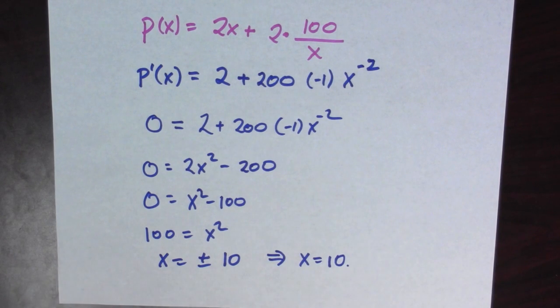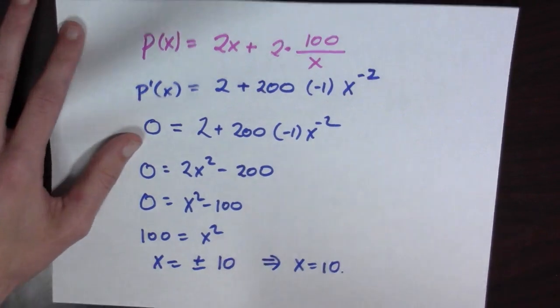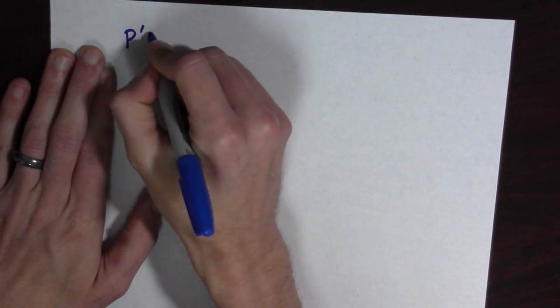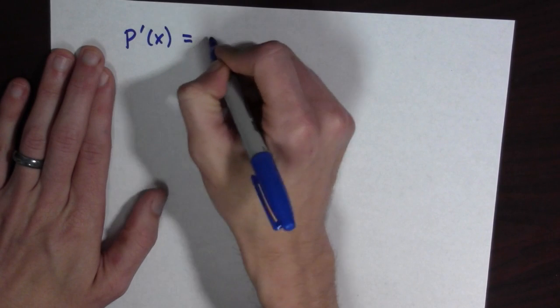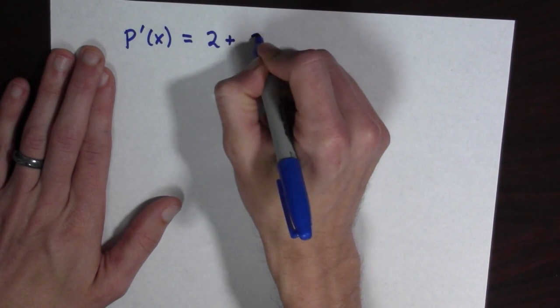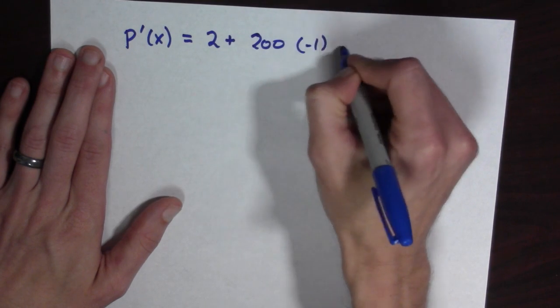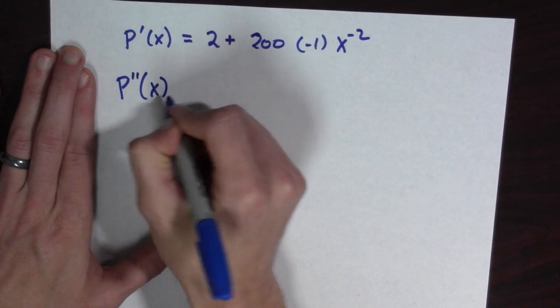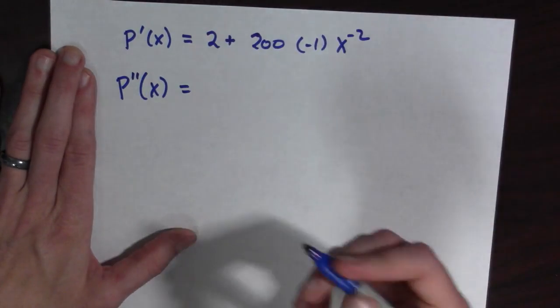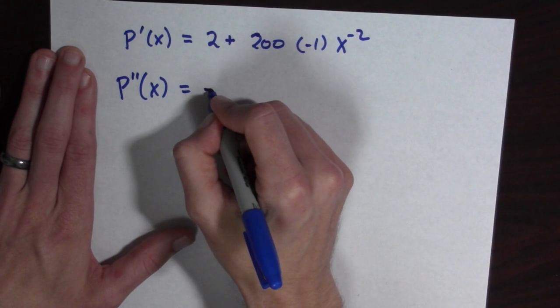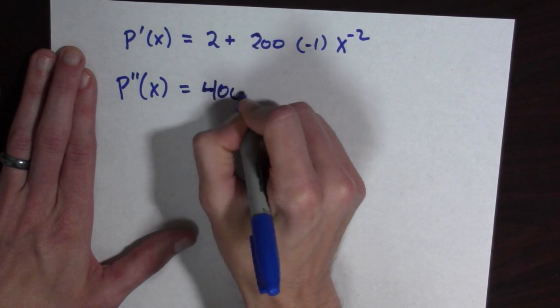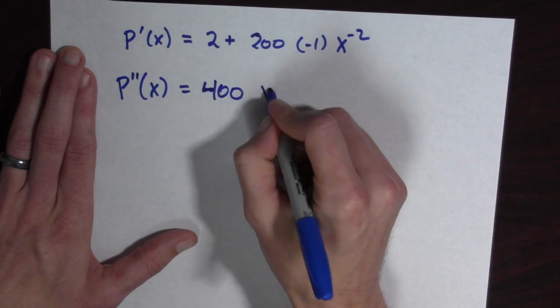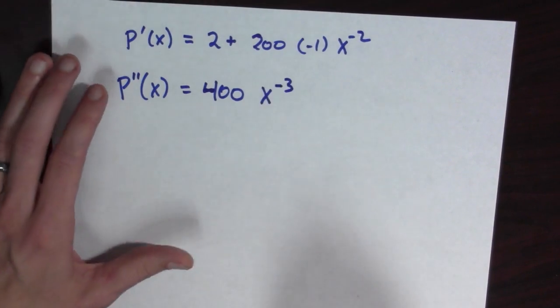Well, to do that, we should check the second derivative. And so let's see what happens here. So if p prime of x is equal to 2 plus 200 times negative 1 x to the negative 2, p double prime of x is equal to, well that goes away. And so it's going to be 400, those will cancel, x to the negative 3.